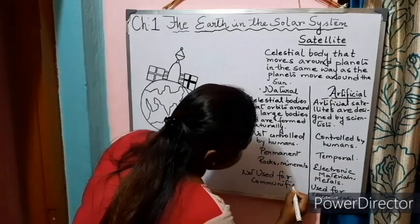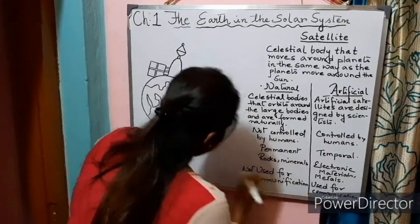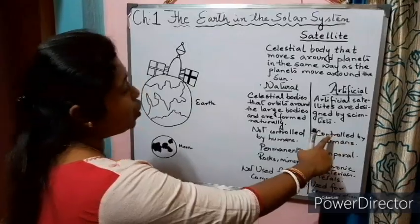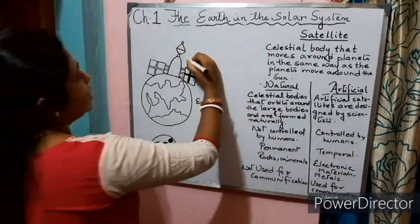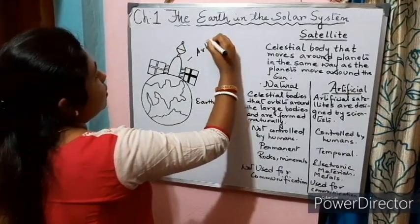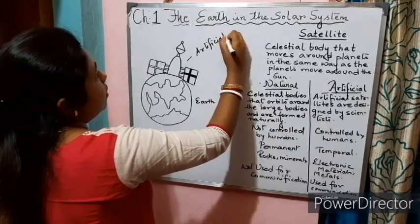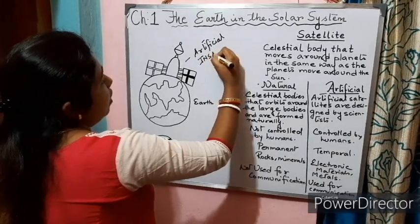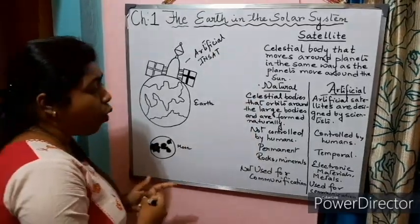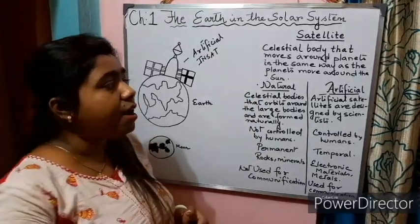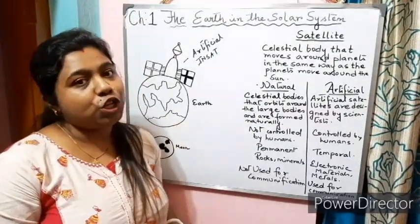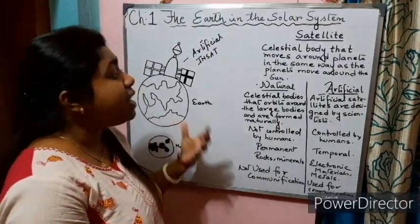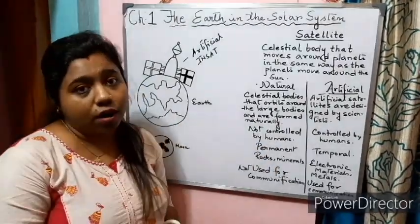The example of a natural satellite is the Moon. Examples of artificial satellites are Insat, Aryabhatta, and Sputnik. All these are examples of artificial satellites. Now let us go ahead with the natural satellite of our Earth, that is the Moon.